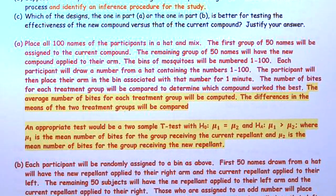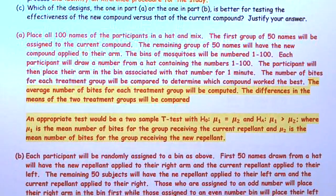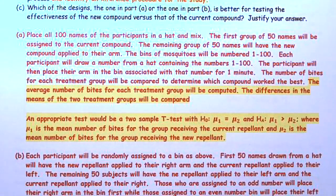Some people are very susceptible to mosquito bites and some aren't. I'm extremely susceptible — mosquitoes love me. So each person will be randomly assigned to a bin. The first 50 names drawn from a hat will have the new repellent applied to the right arm and the current repellent applied to the left arm. The remaining 50 will have the new repellent on the left arm and the current on the right.